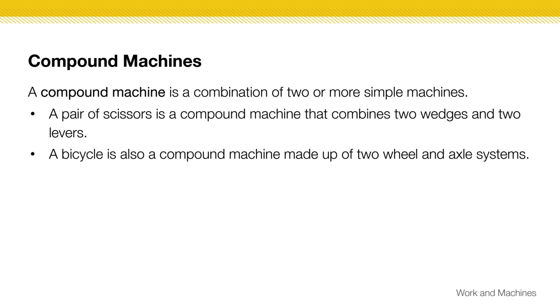Compound machines are when you have a combination of two or more types of simple machines. We'll talk more about these in the next lesson, but I just want you to understand the difference right now. Simple machines do one type of motion. Compound machines have multiple types of simple machines attached to them.